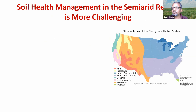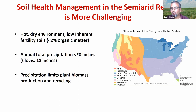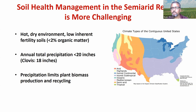This is more important because in New Mexico we are in an arid or semi-arid region. This western part of the US is a hot, dry environment with low inherent fertility — meaning we have a low baseline to begin with. That is very critical when we are thinking about building or improving soil health. Our precipitation is normally less than 20 inches; in Clovis, 17 to 18 inches is typical.